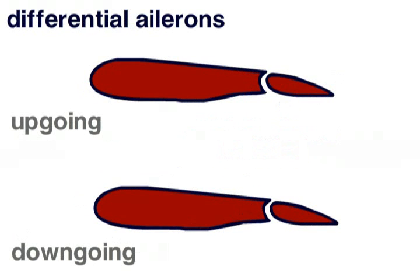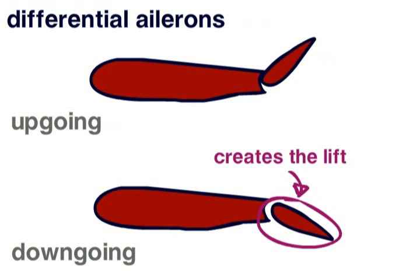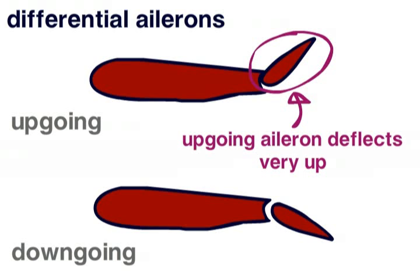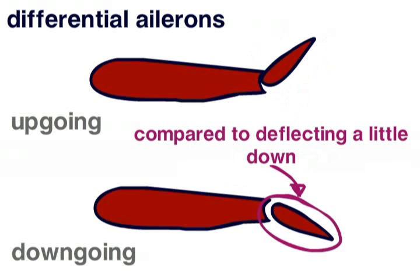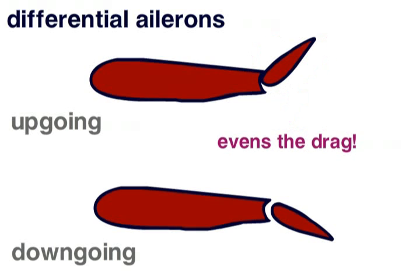Differential ailerons can also be used. The down-going aileron creates lift and therefore induced drag. To even everything out, the up-going aileron deflects upwards more than the down-going aileron deflects downwards. Again, this should help keep the two wings generating similar amounts of drag.